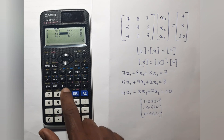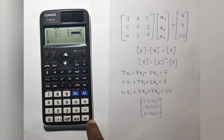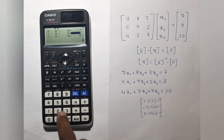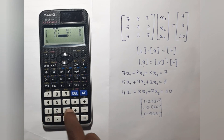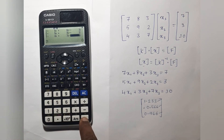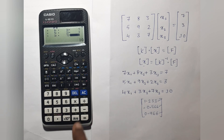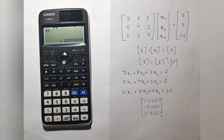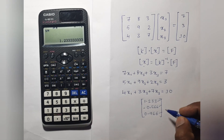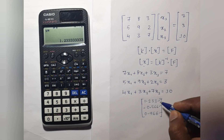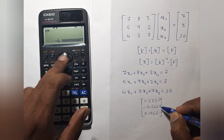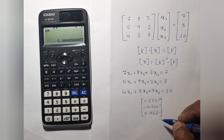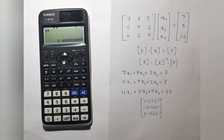Now enter all the remaining values: 5, 9, 2 equals 3, and 4, 3, 7 equals 10. You can verify your answers: the first is 1.2, the next is -0.566, and then 0.966. Thanks for watching.